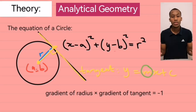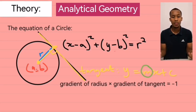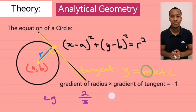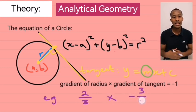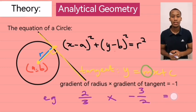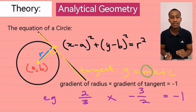So, therefore, the gradient should always be a negative reciprocal. Let me make an example. What if I gave you the gradient of the radius as positive 2 over 3? Then, that implies that the gradient of the tangent is negative 3 over 2. You see? It's the negative reciprocal.